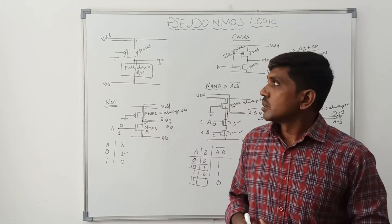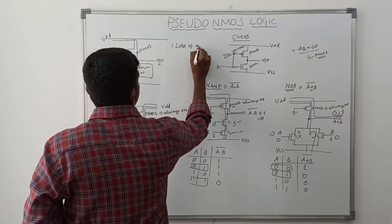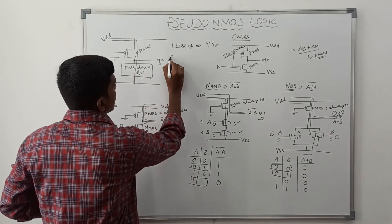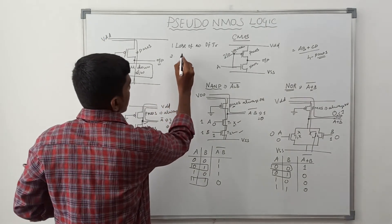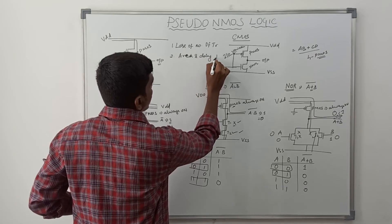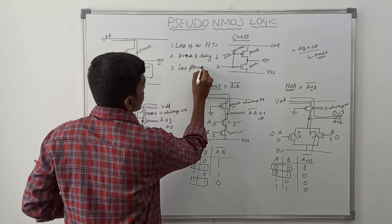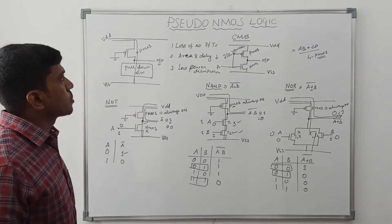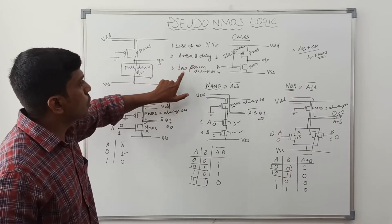Advantages of pseudo-NMOS: First, less number of transistors used compared to CMOS. Second, area is minimized and delay is also minimized compared to CMOS. Third, low power dissipation.